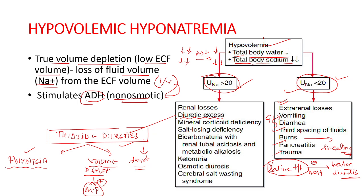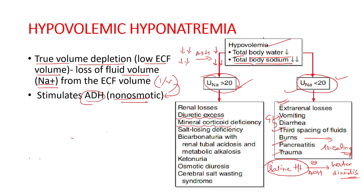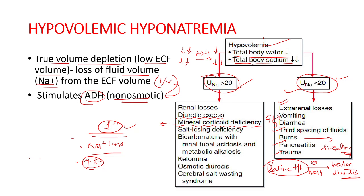Mineralocorticoid deficiency — i.e., aldosterone deficiency — can cause hyponatremia, occurring due to primary adrenal insufficiency. Aldosterone deficiency leads to sodium loss in urine, with associated hyperkalemia because potassium is not excreted in exchange for sodium. Primary adrenal insufficiency leads to hypovolemic hyponatremia, whereas secondary adrenal insufficiency causes glucocorticoid deficiency and results in euvolemic hyponatremia. Other renal causes include salt-losing nephropathies such as reflux nephropathy, interstitial nephropathies, post-obstructive uropathy, medullary cystic disease, and the recovery phase of ATN.